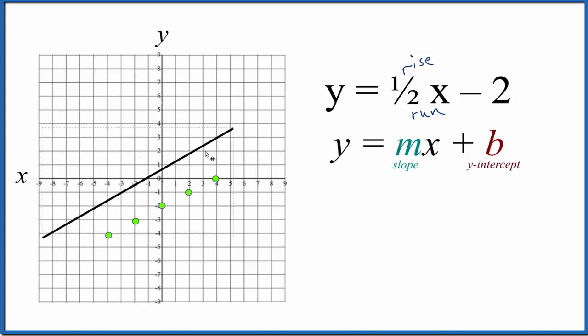It's the same thing we got before when we plugged values in with our table. So it's always a good idea if you graph a linear equation by plotting points using a table, you should also check it with something like slope-intercept formula.